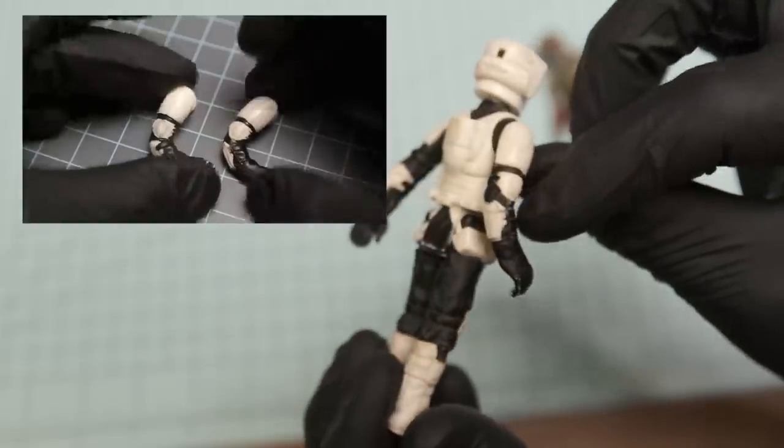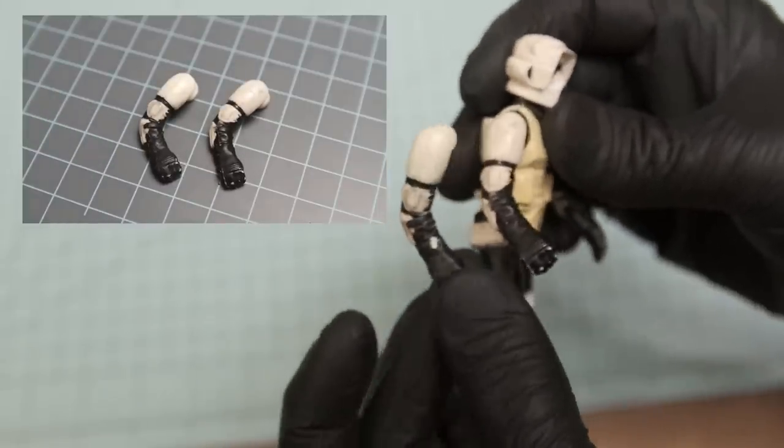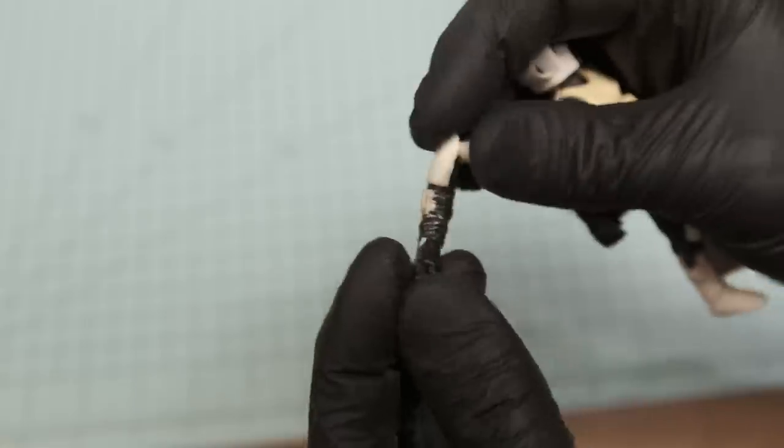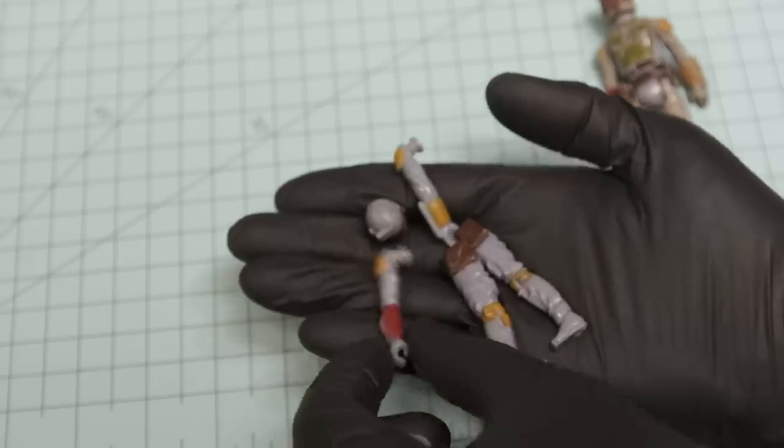For example, that is an original Biker Scout arm right there. And that is a copy that I made out of a very tough, flexible resin.